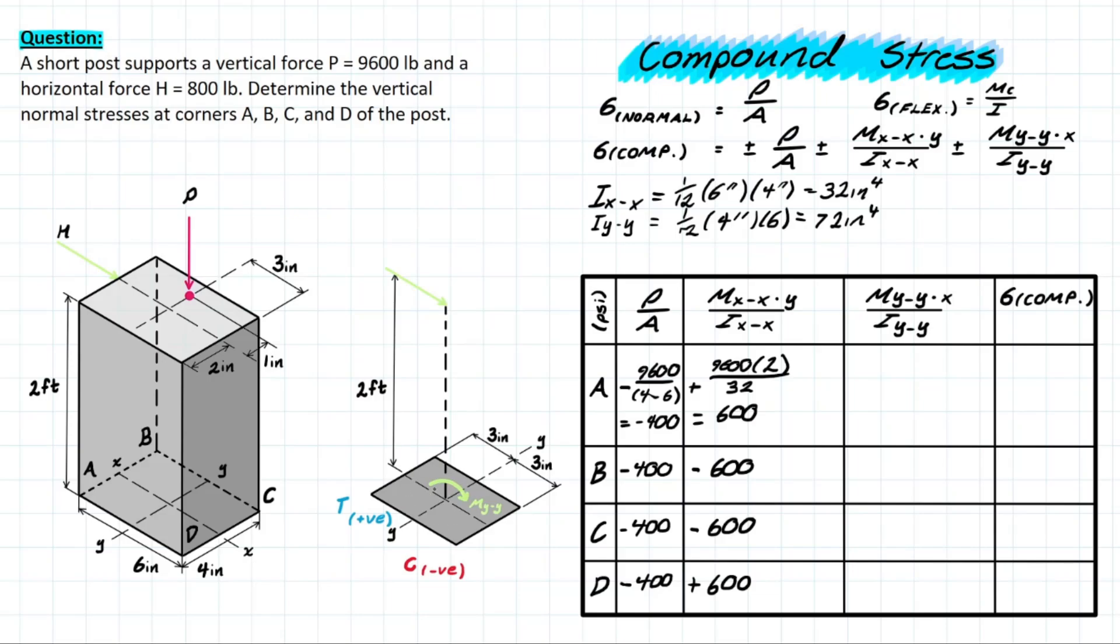We have a distance of two feet away from that force with respect to the area that we're analyzing and we have this horizontal force as 800 pounds so we know that this myy is going to be equal to that 800 pound force times the distance away which is two feet and converting that into inches we have to do 12 inches per foot.